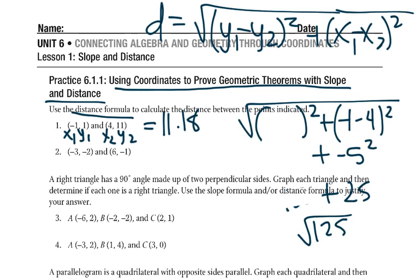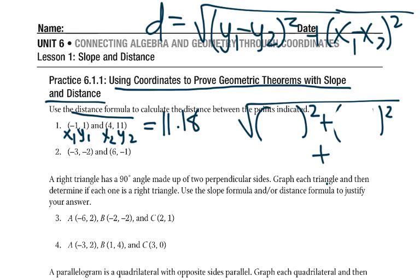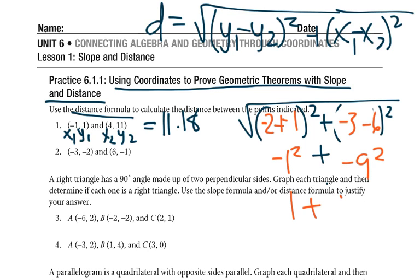Number 2 is treated the same exact way. We get negative 2 minus negative 1, and negative 3 minus 6. That gives us negative 1 squared plus negative 9 squared, so 1 plus 81, which is the square root of 82 — about 9.1.